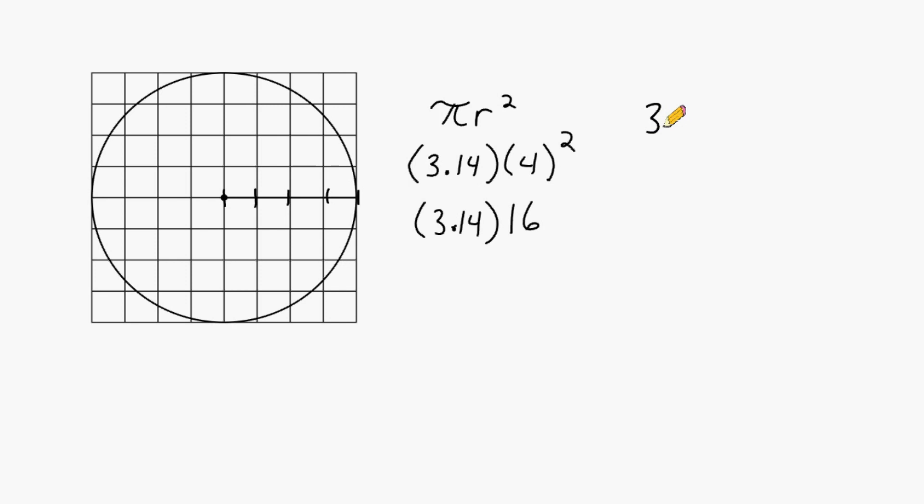Now we're going to go off to the side here and multiply 3.14 by 16. 6 times 4 is 24, 6 times 1 is 6 plus that 2 we carried is 8, 6 times 3 is 18, and we put a 0 right here, and 1 times 314 is, of course, 314.